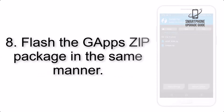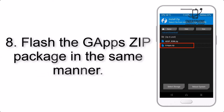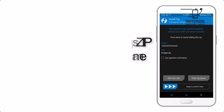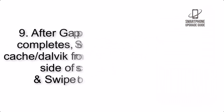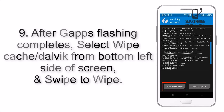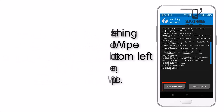Step 8: Flash the GApps zip package in the same manner. Step 9: After GApps flashing completes, select Wipe Cache and Dalvik from the bottom left side of the screen, and swipe to Wipe.